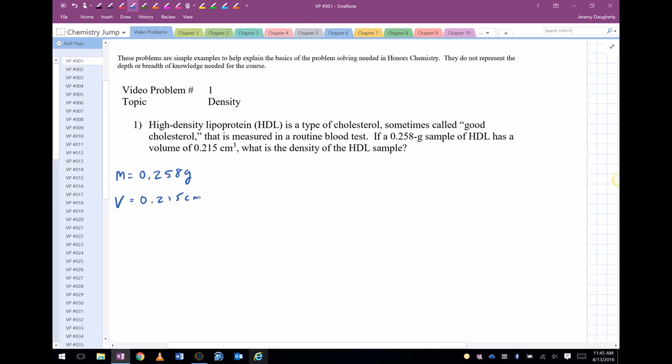What is the density? So we're looking for density. We're going to use the equation density equals mass over volume, and we don't have to manipulate the variables because density is already solved for. So we've got density equals 0.258 grams divided by 0.215 cubic centimeters. Plug that into your calculator.